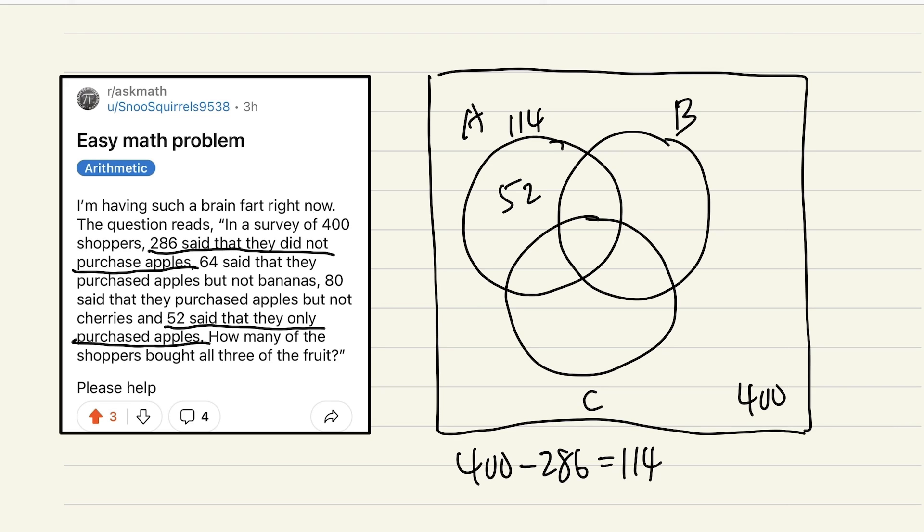Now let's go back to here. It says 64 said they purchased apples but not bananas. So I have to avoid bananas. So let me just go ahead and draw like this. And I have to include apples like that. Could it be cherries? Sure thing. So that's that.